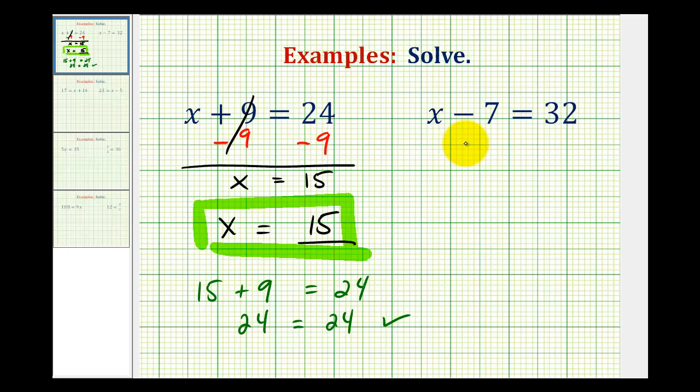Now looking at our second example, our goal is the same. We want to isolate the variable on one side of the equal sign. So we want to manipulate this equation so it's in the form of x equals some number.